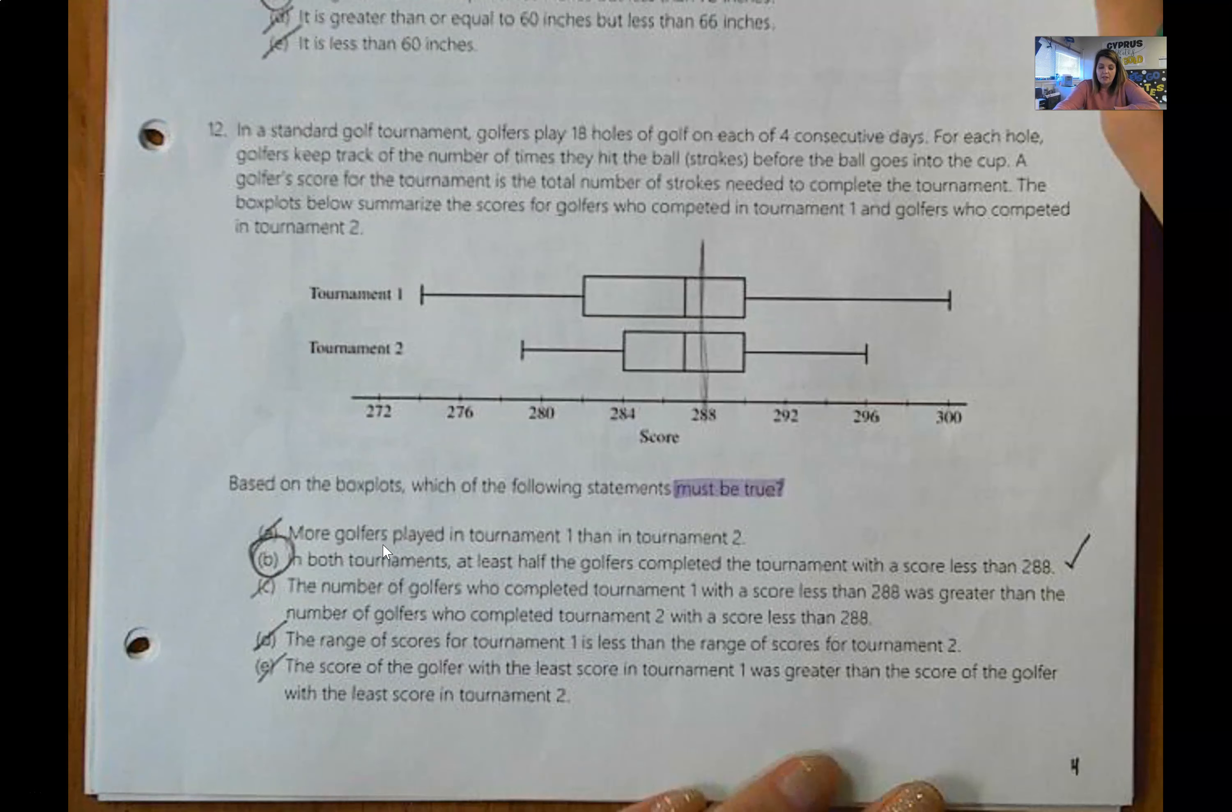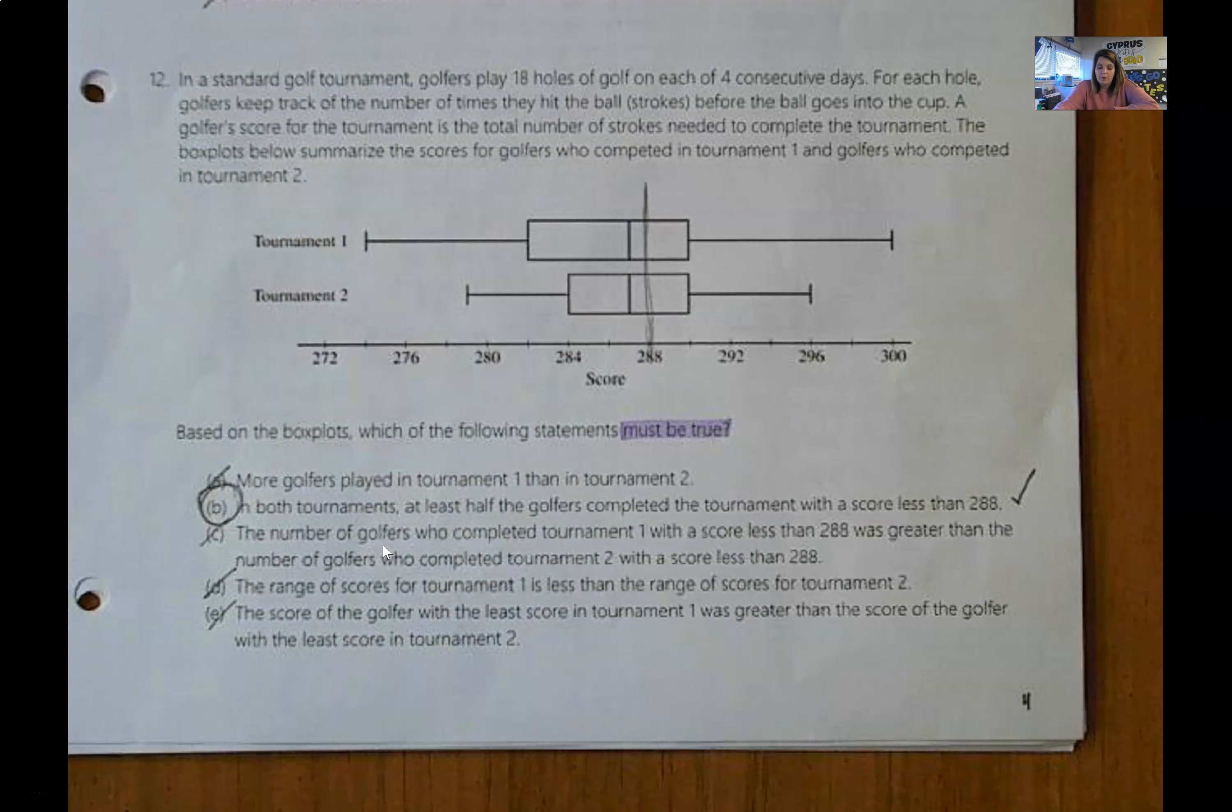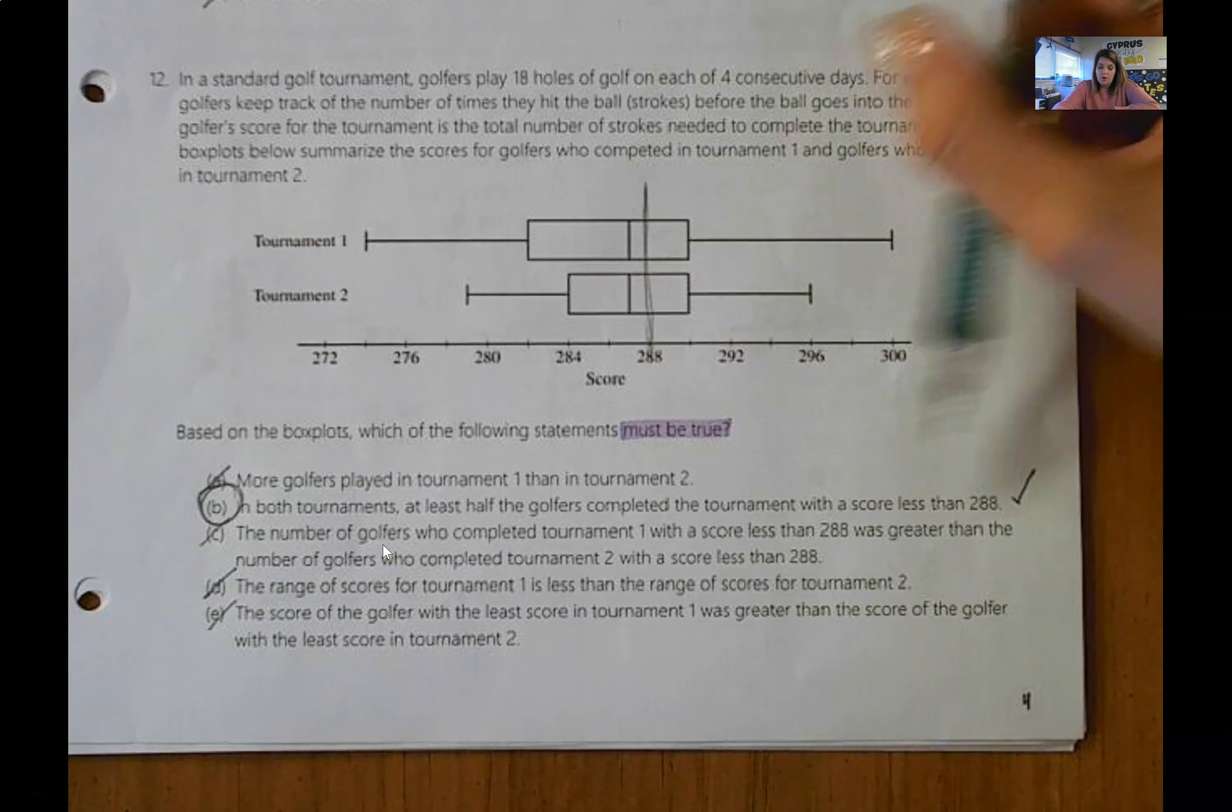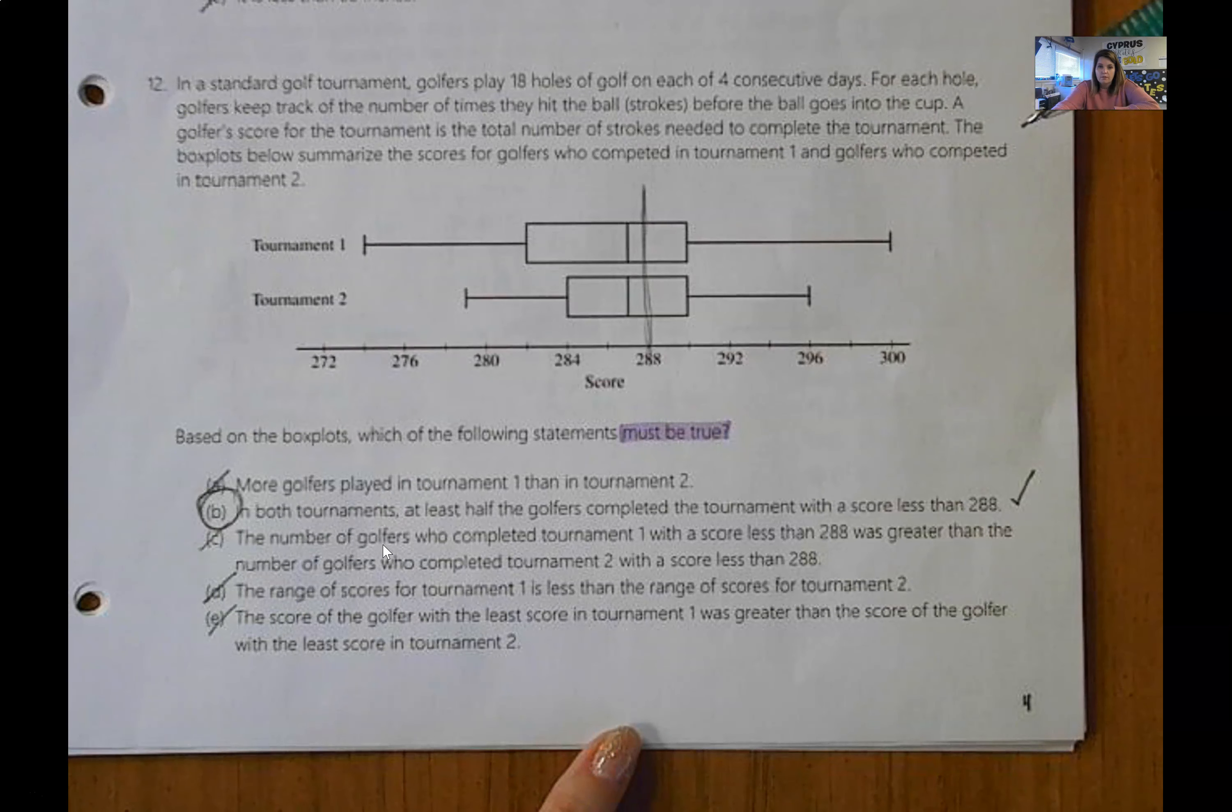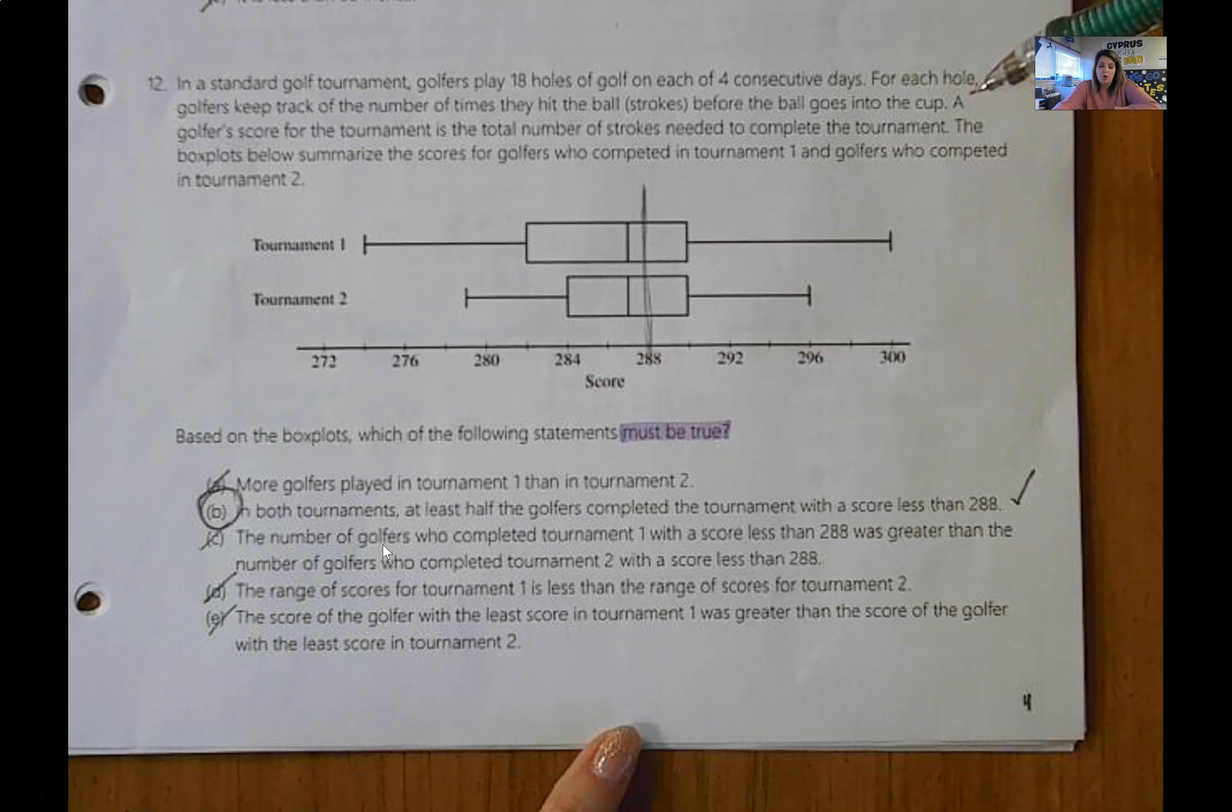12 is beta. So A is not an option because we don't know how many people participated in the tournament. B is true. If you wanted to go through and calculate the rest, you would be able to know that all of those are false. So one of the bigger takeaways from this is that unless you're told, you won't know what number of observations you had. You won't know n.